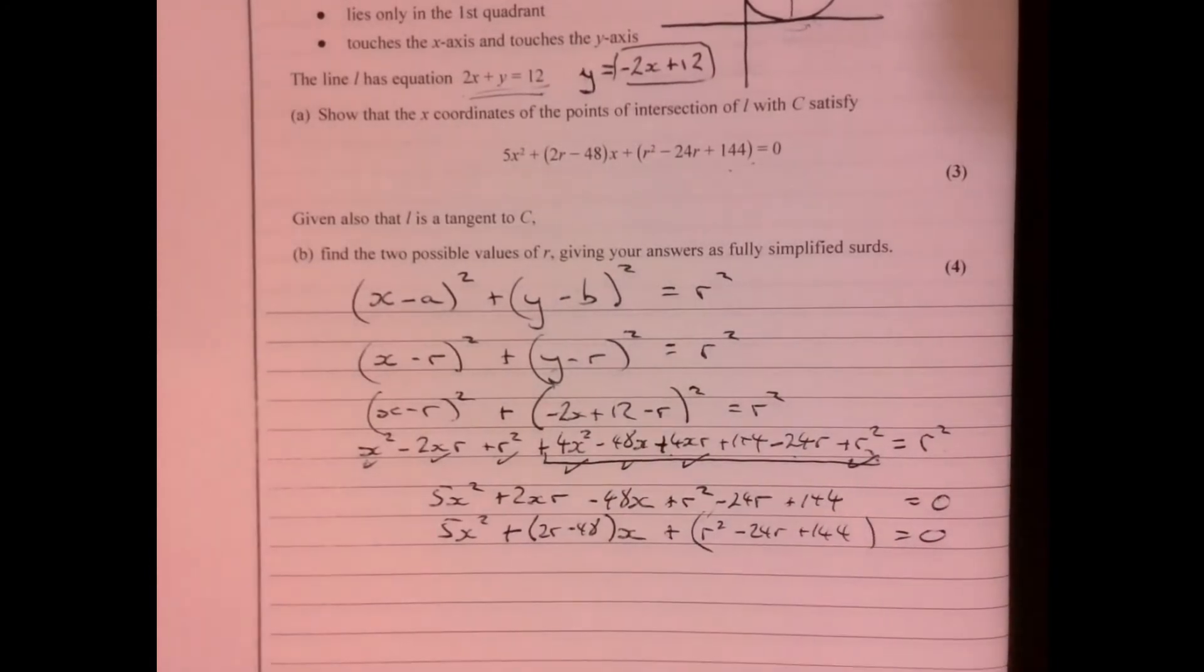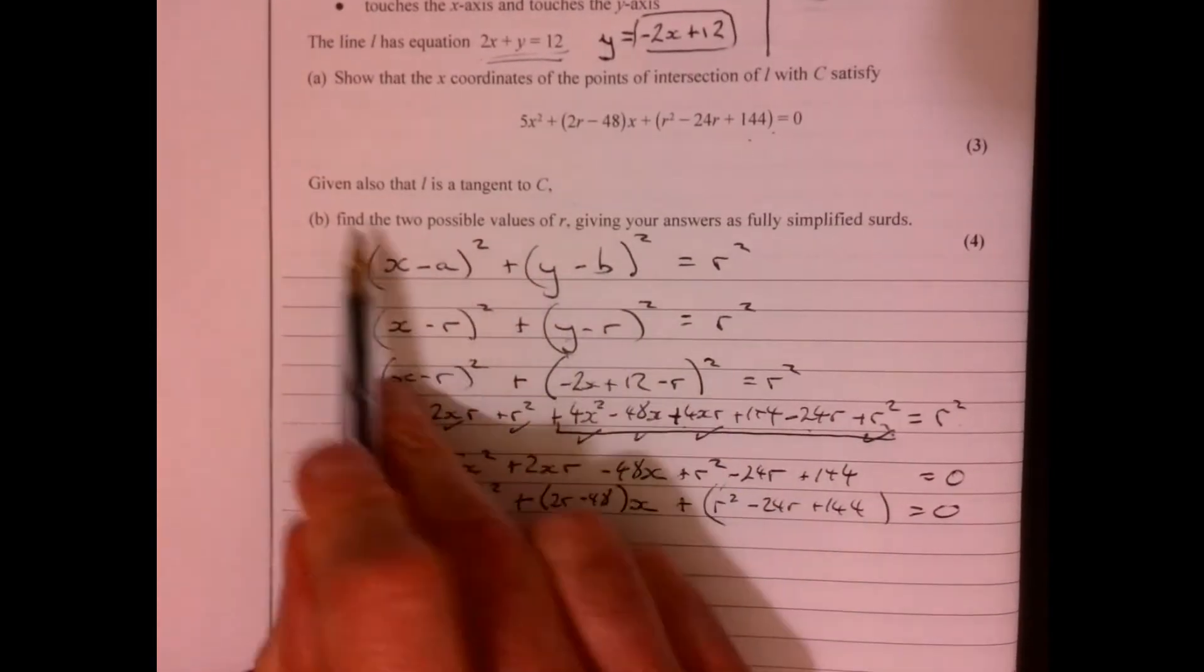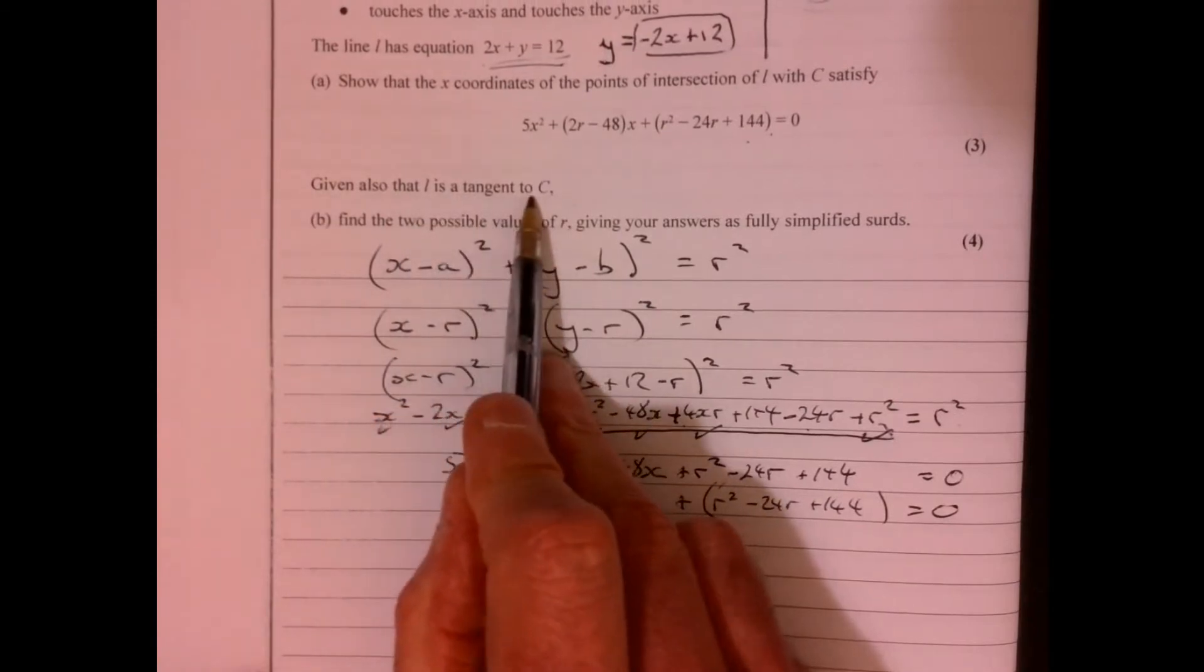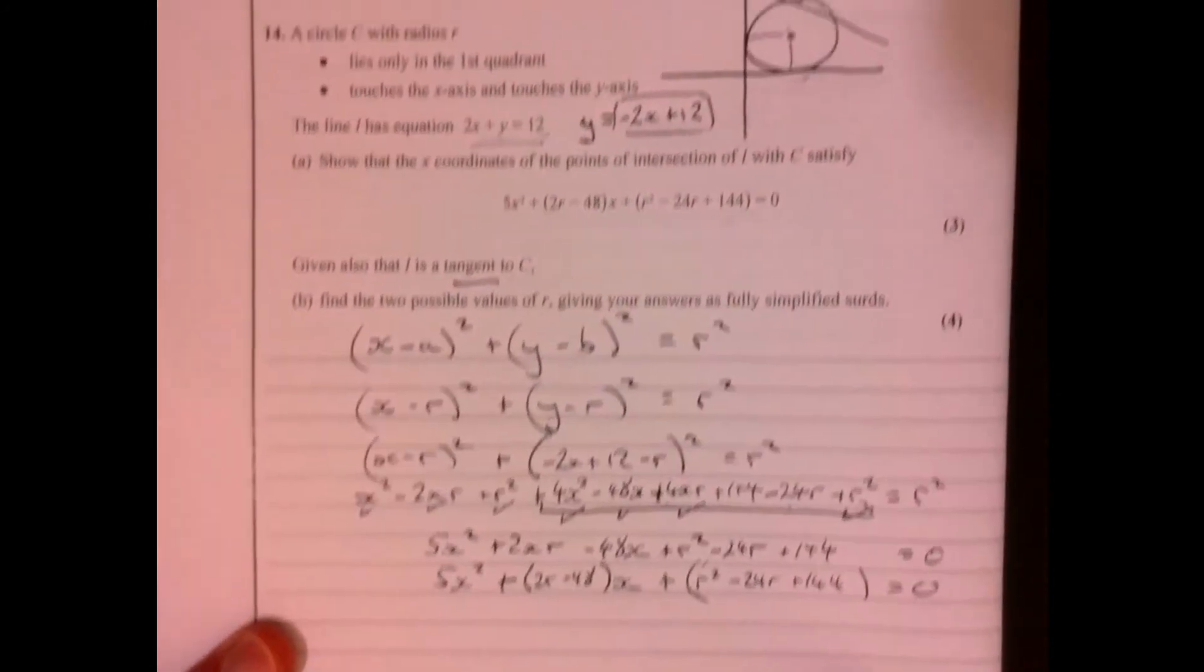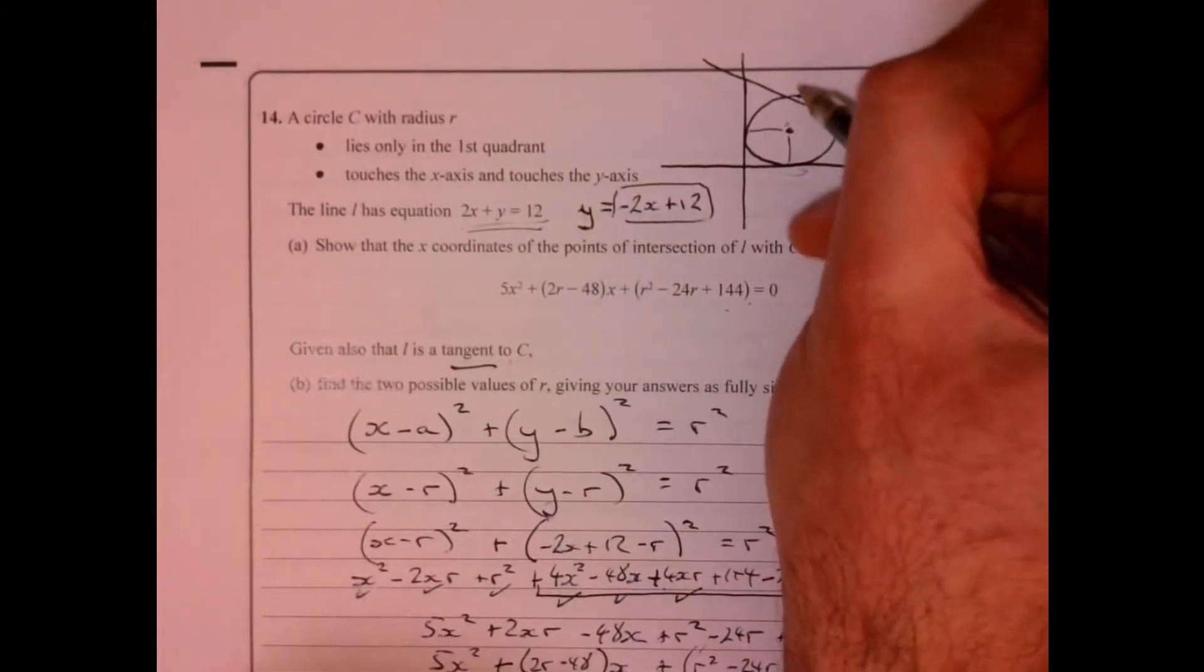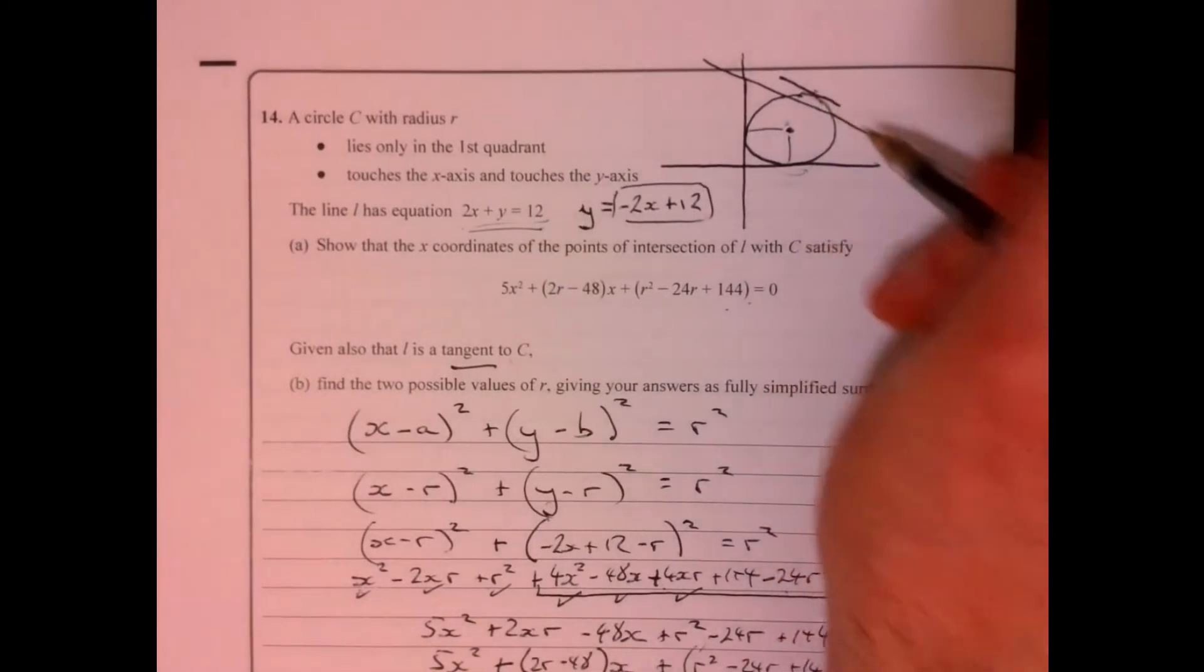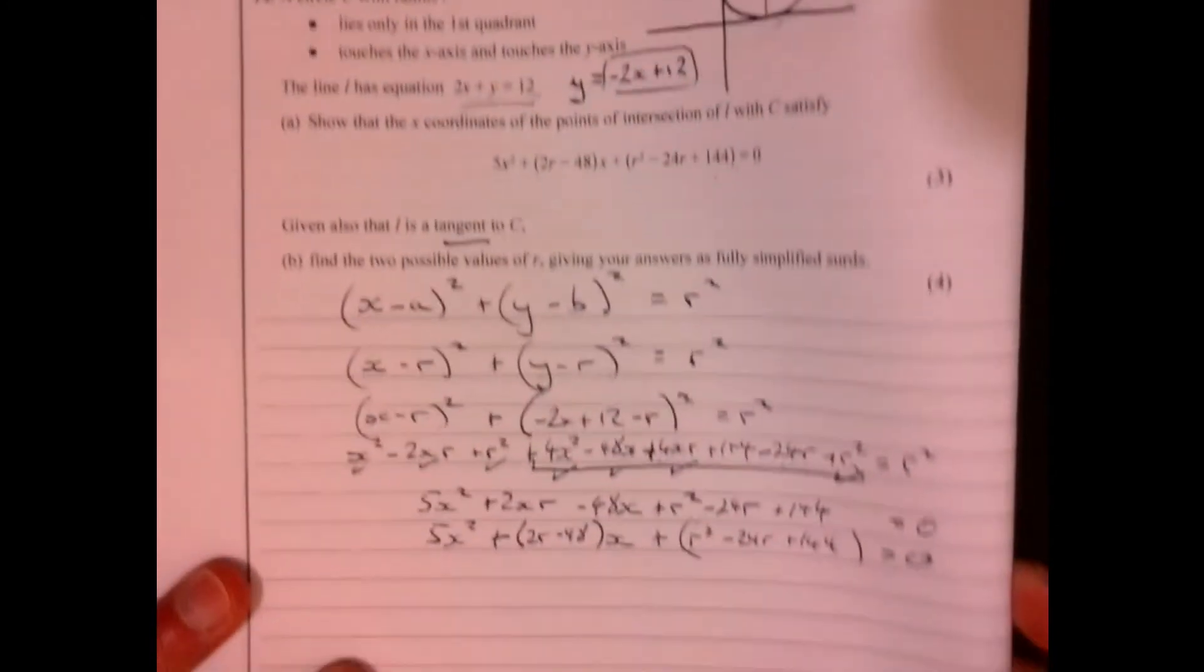Because the next bit of the question says given also that line L - we're told that L is a tangent to C. So what does tangent mean? Tangent actually means the line will just clip it. It's just going to clip it, so it's only going to have one solution.